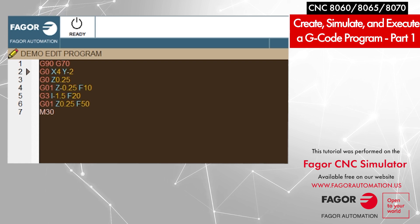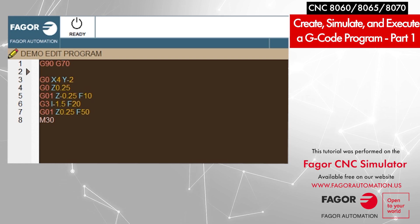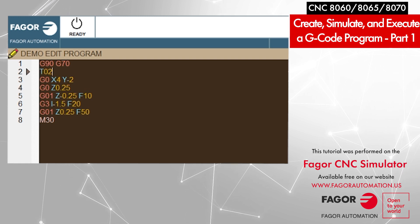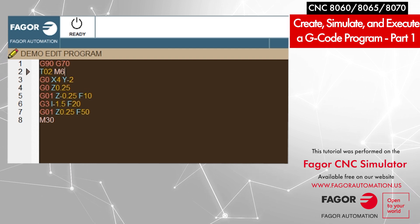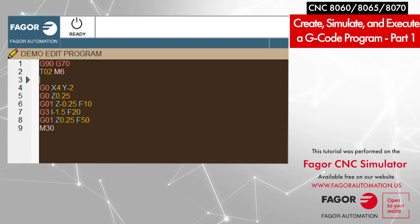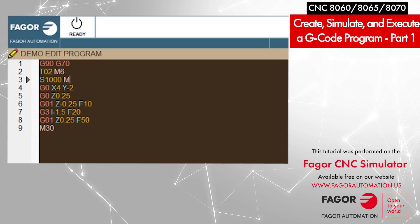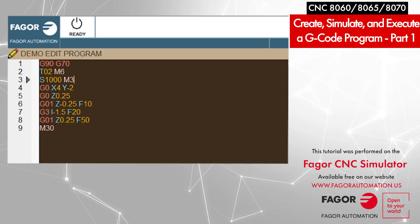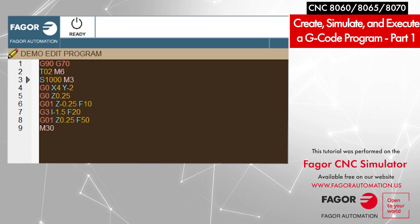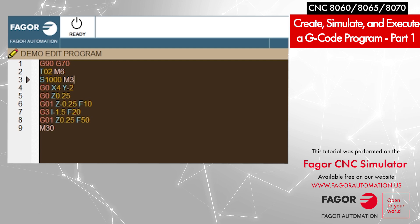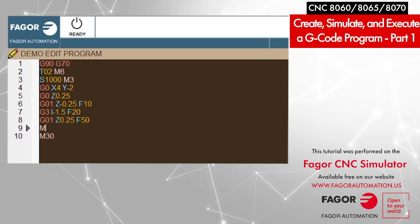I bring my cursor to line 2, press Enter, move up, and program the tool: T02 M6. After that, it's a good idea to program a spindle speed — I add S1000 M3 on a new line. I also add M5 before the end of the program to stop the spindle.